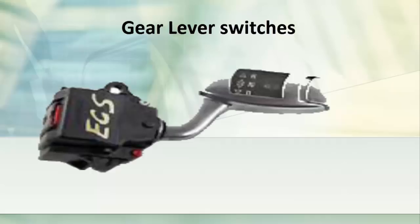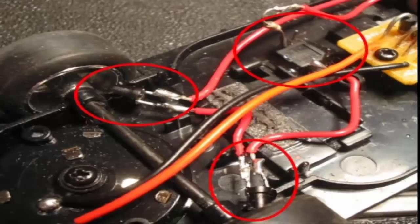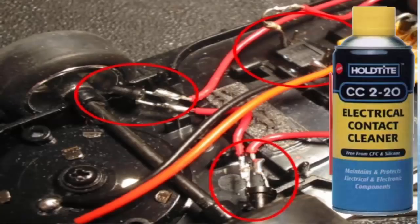Fourth, gear lever switch. It gives a signal as to which mode to drive the vehicle. If you experience any issues with adventurous driving, open the switch and use electrical contact cleaner on the points inside the gear switch.